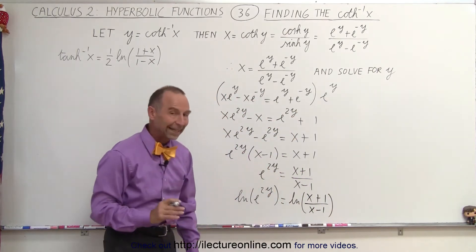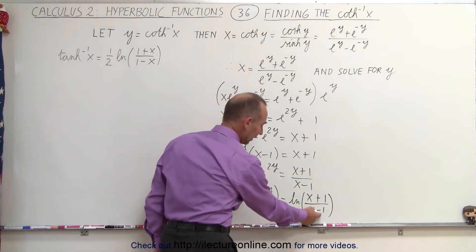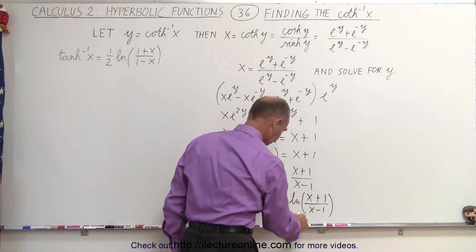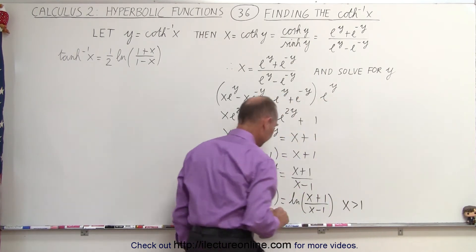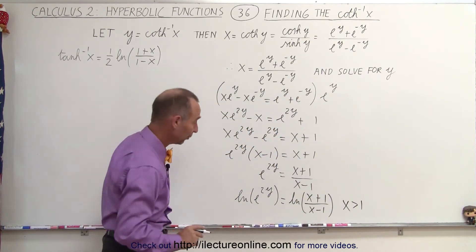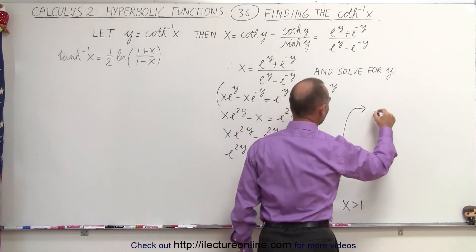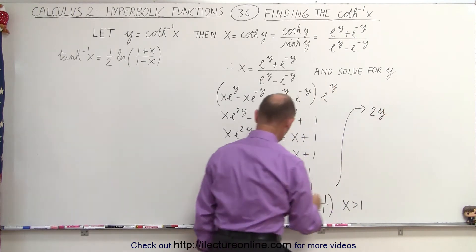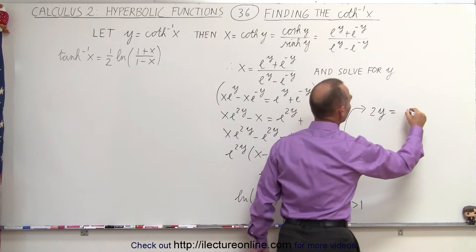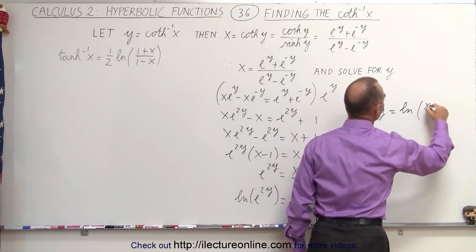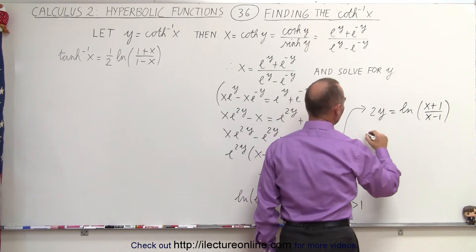The restriction here is that x is going to have to be larger than 1, so we cannot have a negative or a 0 in the denominator. So x must be larger than 1, not equal to, because that doesn't work. And then we come up here to finish it off. So we can say that 2y — because the natural log of e to the 2y is simply 2y — is equal to the natural log of x plus 1 divided by x minus 1. And then divide both sides by 2.